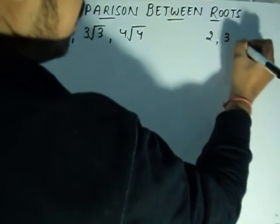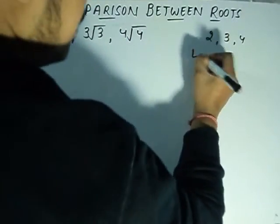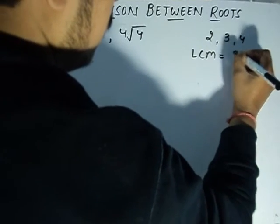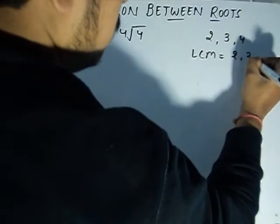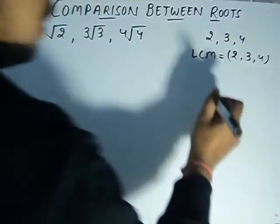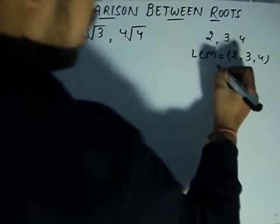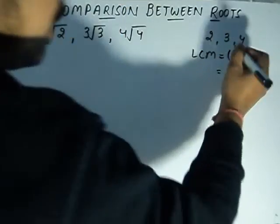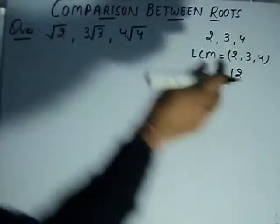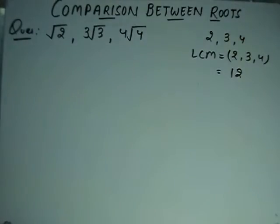I calculate the LCM — using 2, 3, 4 — which gives 12, just like the previous example.